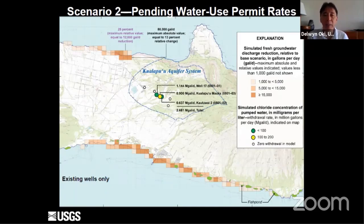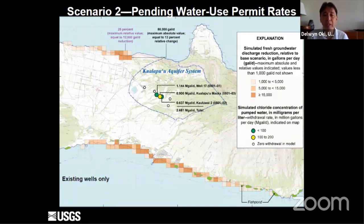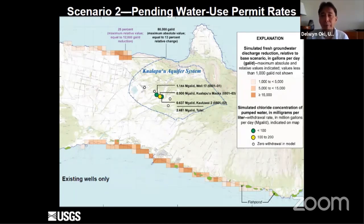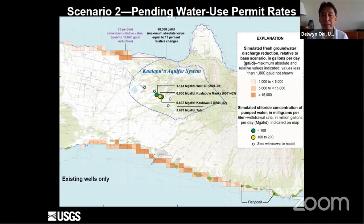We also looked at the reduction in coastal groundwater discharge under this scenario. Darker squares near the coast represent greater reduction in groundwater discharge relative to lighter colors. The darker colors are mainly immediately north and south of the production wells, and as you get further away along the coastline from those production wells the colors get lighter. This demonstrates that the effects of withdrawal on groundwater discharge are greater the closer you are to the sites of withdrawal, and the impacts lessen as you get further away.